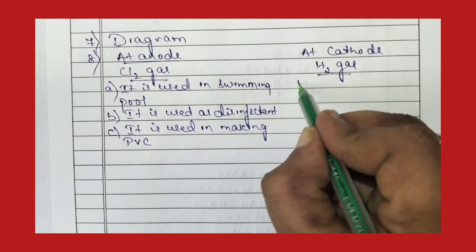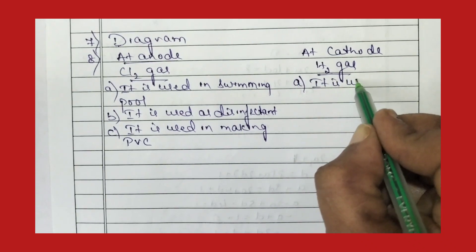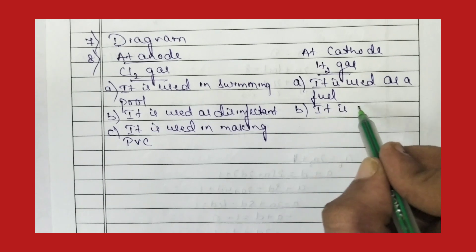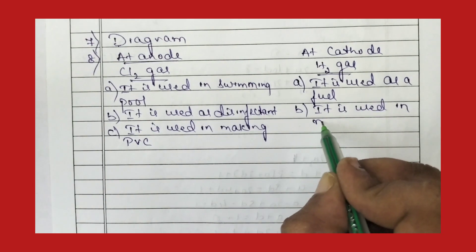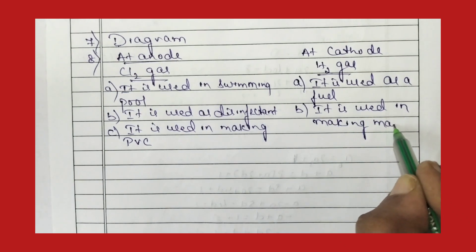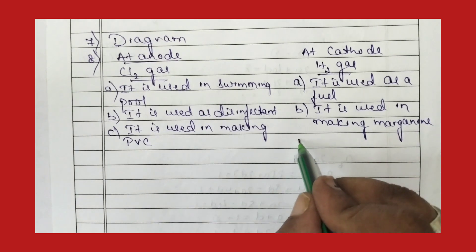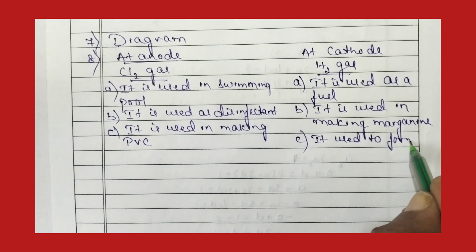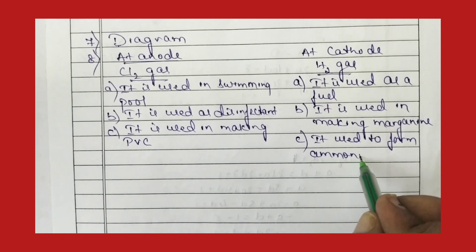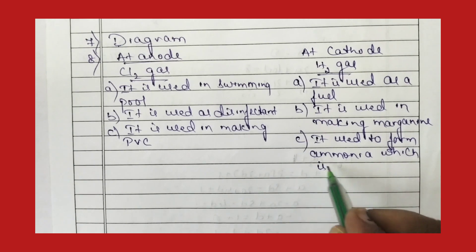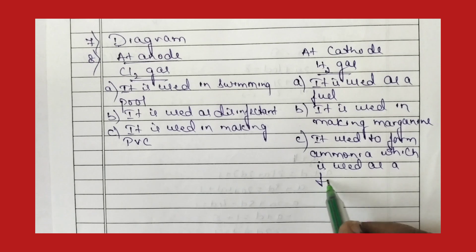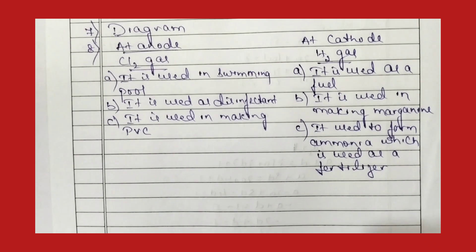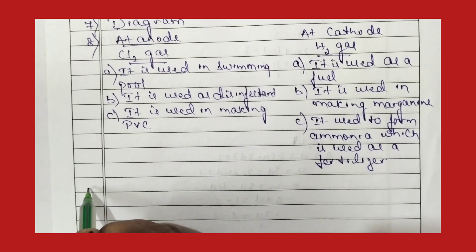At the cathode, hydrogen gas is collected. The uses of hydrogen gas are: first, it is used as a fuel; second, it is used in making margarine (Dalda); and third, it is used to form ammonia, which is used as a fertilizer. These are the uses of gases collected at the anode and cathode during the chloralkali process.